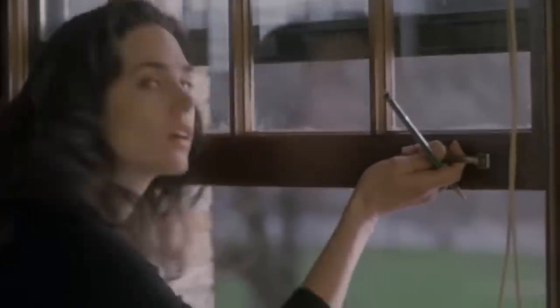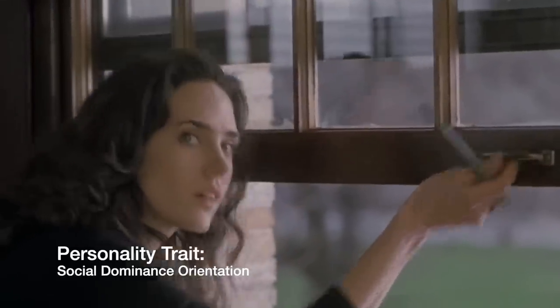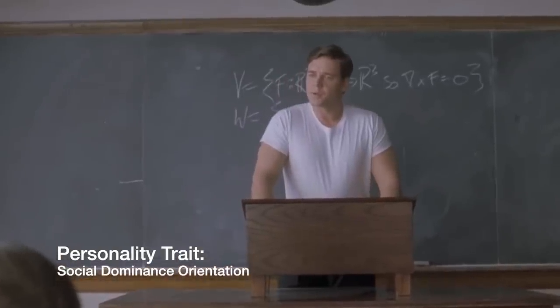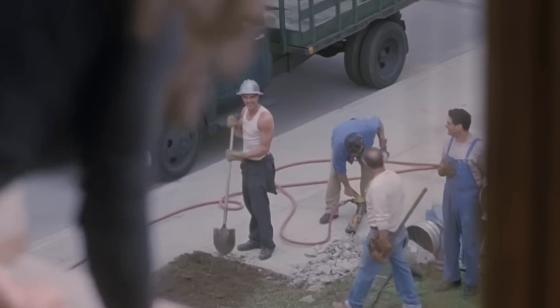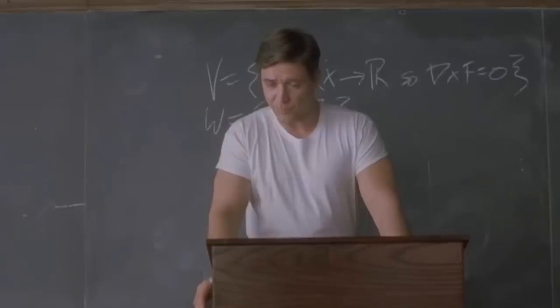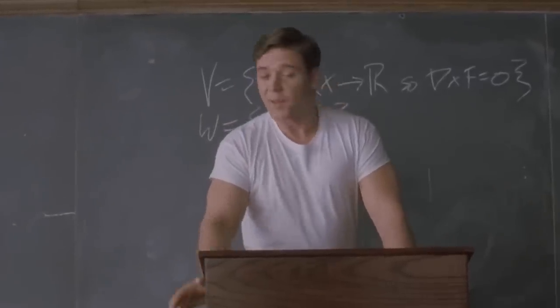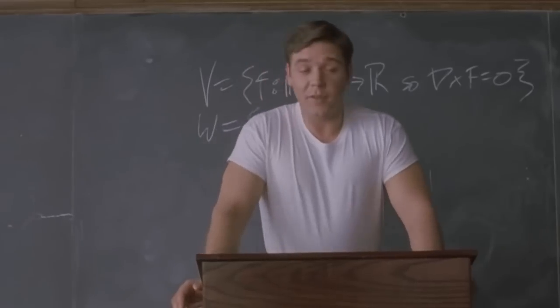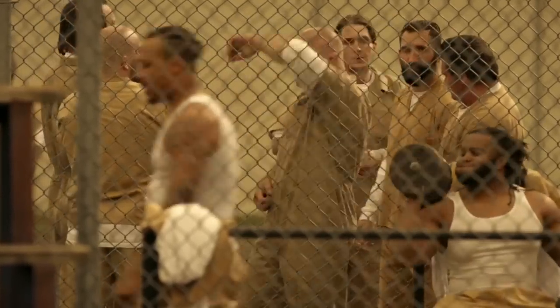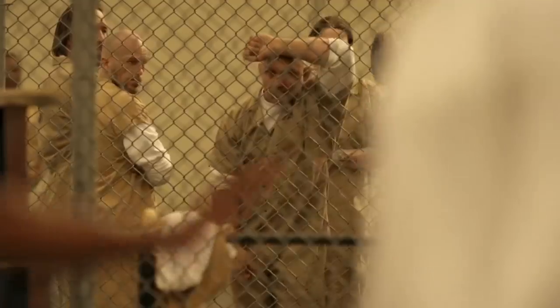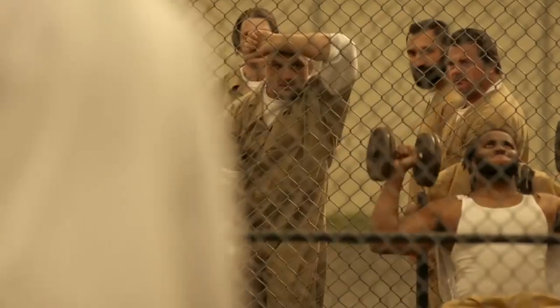Psychologists created a questionnaire to measure something called social dominance orientation — a type of personality trait. People with this trait believe some are inferior, that situations where some are on top and others are on bottom are inevitable in life, and that trying to change this won't work. Those high on social dominance orientation will often use aggression, violence, intimidation, and threats to increase the perceived social gap between themselves and others.